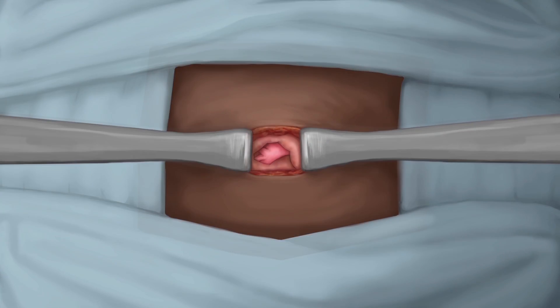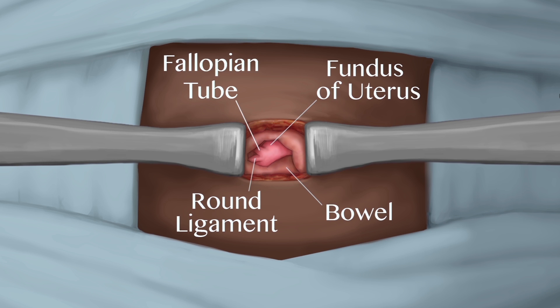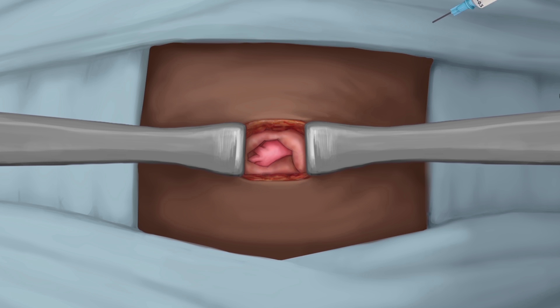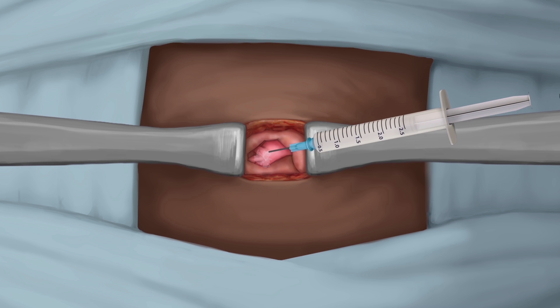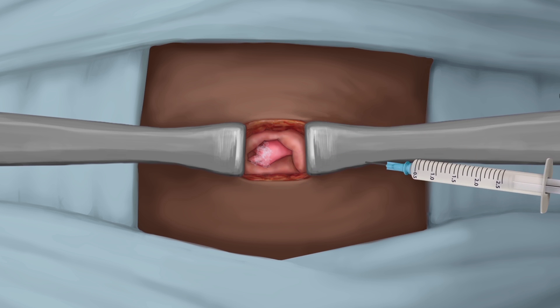The fimbria might not be visible due to adhesions. Look for surrounding anatomy or spatial orientation to confirm the fallopian tube. If the patient is experiencing discomfort, consider dripping lidocaine onto the fallopian tubes and broad ligament.